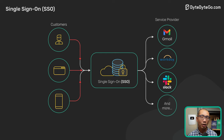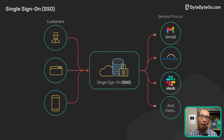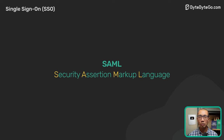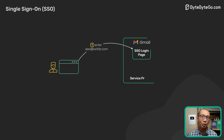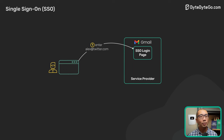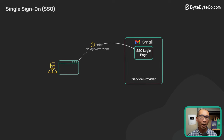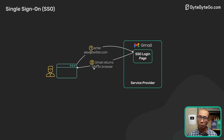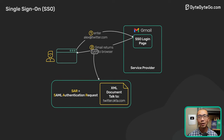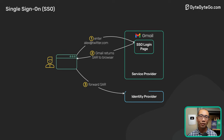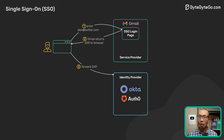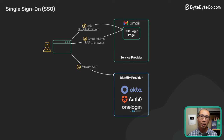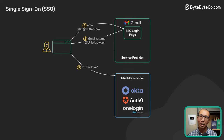Let's walk through a typical SSO login flow and learn how it works. In this walkthrough, we will focus on SAML. An office worker visits an application like Gmail. In SAML terms, Gmail in this example is a service provider. The Gmail server detects that the user is from a work domain and returns a SAML authentication request back to the browser. The browser redirects the user to the identity provider specified in the SAML authentication request. Okta, Auth0, and OneLogin are some common examples of commercial identity providers.